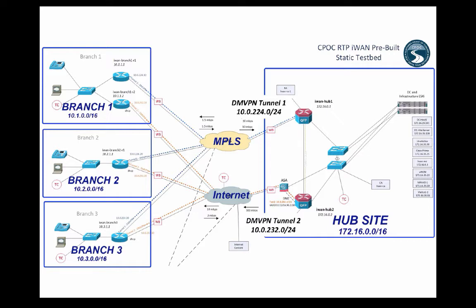Up at the hub site, everything is 172.16.0.0/16. Connected to the MPLS cloud, we have an ASR 1002X which is acting as the DMVPN hub for tunnel one.